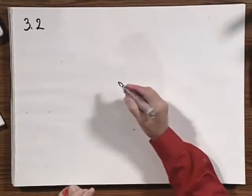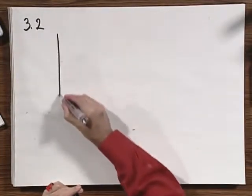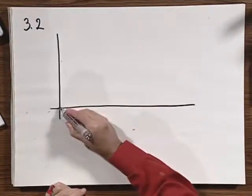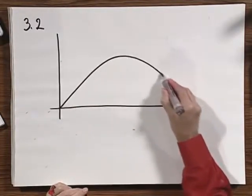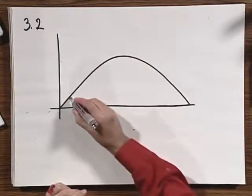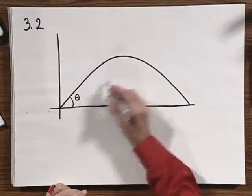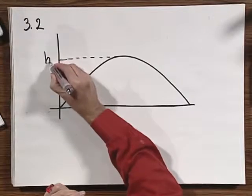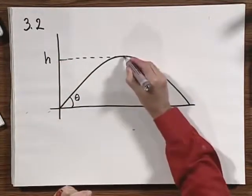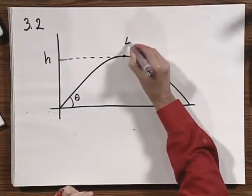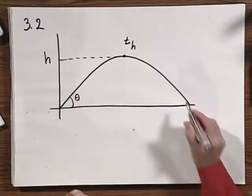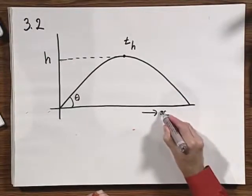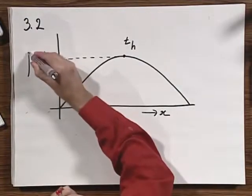The astronaut is on the moon, and the astronaut is throwing up an object at a certain angle theta, and the object reaches a height h. It reaches the highest point at a time t_h, that is my shorthand notation. This is the x-direction, and let this be the y-direction.